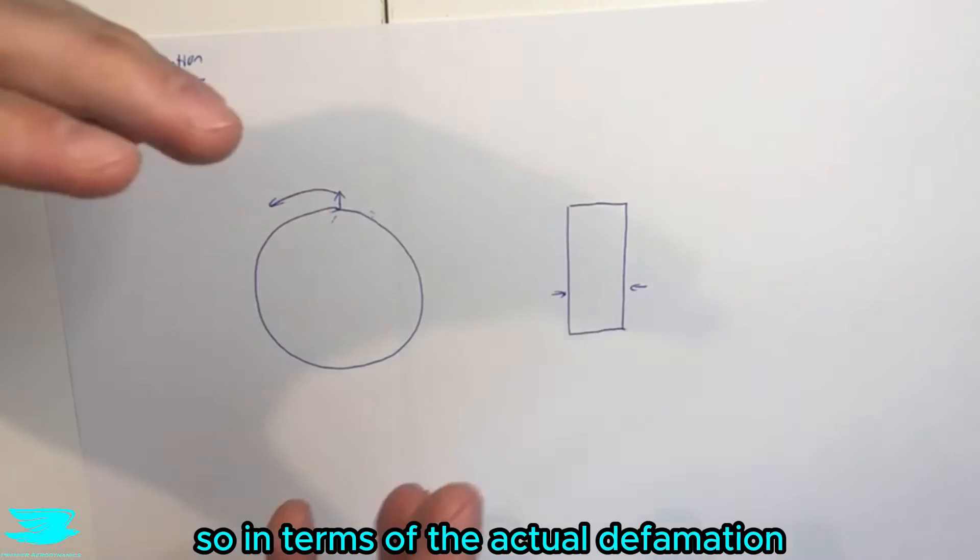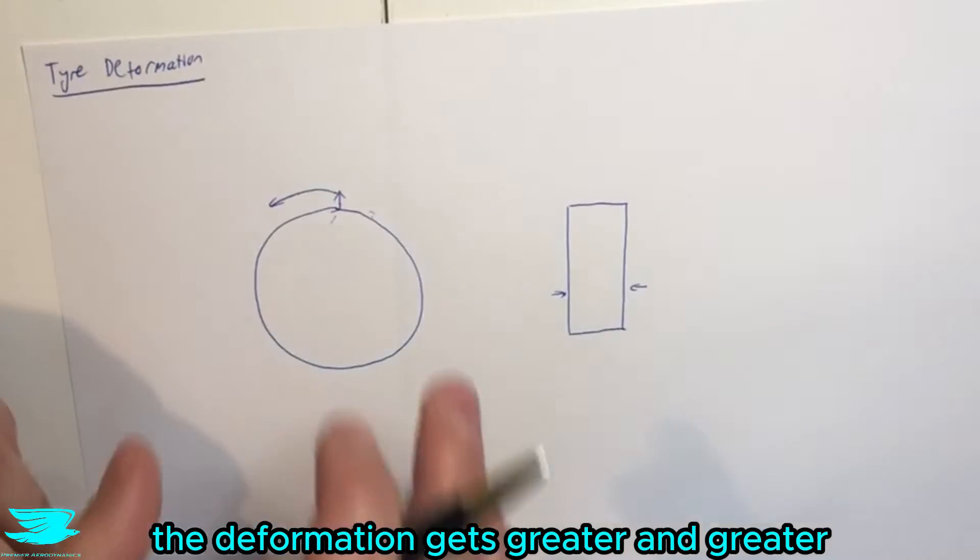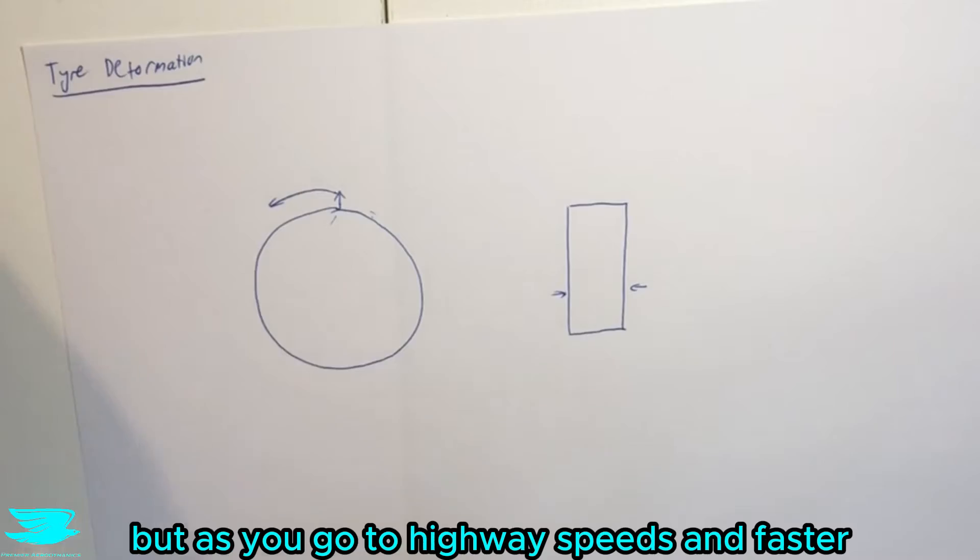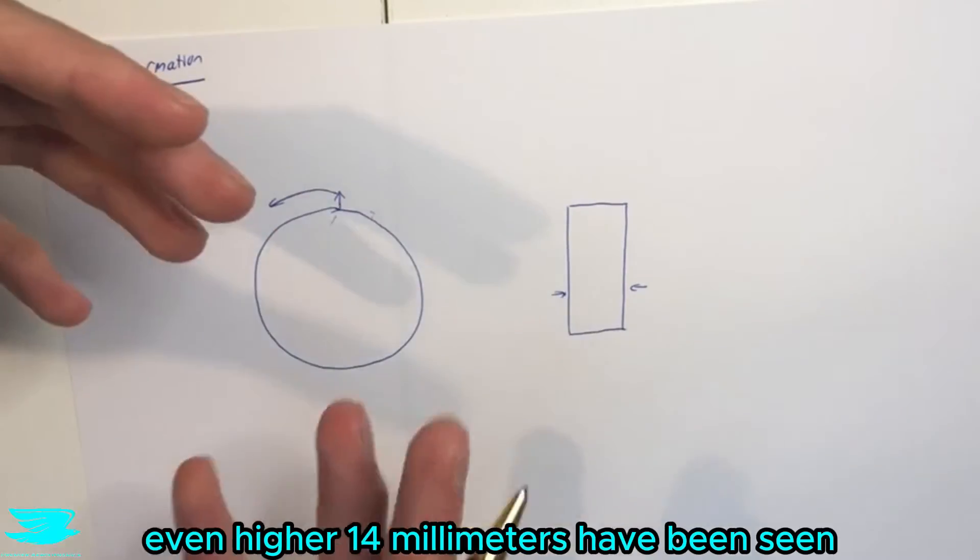So in terms of the actual deformation during a cruising round, as you go to higher velocities, the deformation gets greater and greater. We start off with maybe a couple of millimeter deformation when we're just going around the city, but as you go to highway speeds and faster, these deformations can go up to about 10 millimeters, even higher.